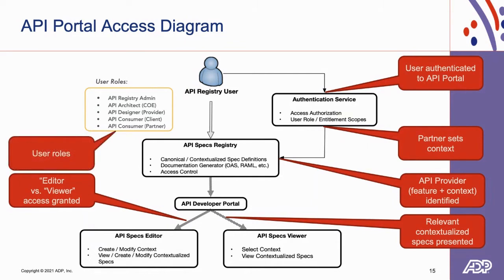Here is the high-level diagram demonstrating the API portal access flow. It starts with user authentication to the API portal. If a partner is detected, a choice of contexts is offered so the partner can choose a context. Based on the selected feature and requested context, the API provider is identified by the API registry and the user is directed to the customized API portal, which supports different access modes: editor, typically on the provider side where the user can edit specifications, and viewer on the consumer side. Roles defined include API consumer, API designer, API architect, and API registry admin.